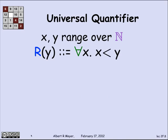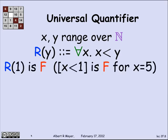Let's look at the same example with a universal quantifier. This time, we'll say that R of y means that for every x, x is less than y. Well, R of 1 is false. And the reason is that 5 is a counterexample. 5 is not less than 1, and so it's not true that every x is less than 1.